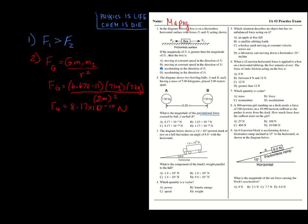That gives us choice C. Make sure you know what variables correspond to what — seven kilograms is mass, and two meters is r, the distance. Number three: we have a trunk going down a ramp.